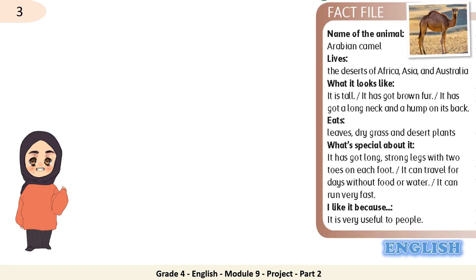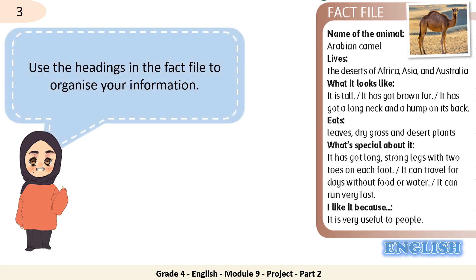Writing tip number 3: use the headings in the fact file to organize your information. The headings are: Name of the animal, Lives — which means where does it live — What it looks like — a description of the animal — Eats — what does it eat — What's special about it, and why do you like it?